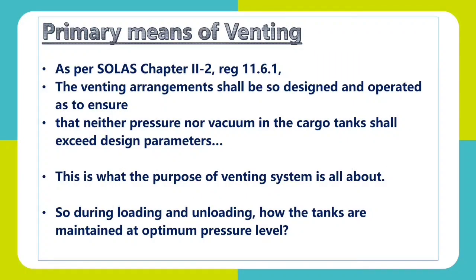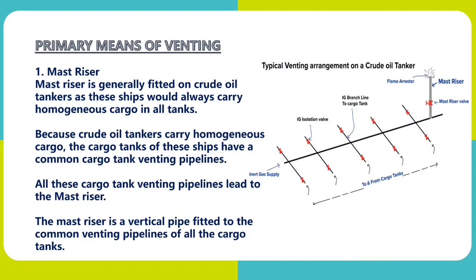Primary means of venting. As per SOLAS Chapter 2, Part 2, Regulation 11.6.1, the venting arrangement shall be so designed and operated as to ensure that neither pressure nor vacuum in the cargo tank shall exceed design parameters. During loading and unloading, the tanks are maintained at optimum pressure level by means of the venting system. We have the mast riser, which is generally fitted on crude oil tankers as these ships would always carry homogeneous cargo. The cargo tanks of these ships have common cargo tank venting pipelines, and all these cargo tank venting pipelines lead to the mast riser.